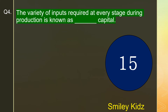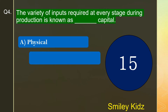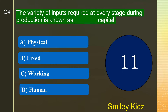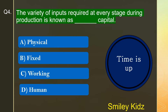Question number 4. The variety of inputs required at every stage during production is known as dash capital. The options are A. Physical, B. Fixed, C. Working, or D. Human. Your time is up and the right answer is option A. Physical. The variety of inputs required at every stage during production is known as physical capital.